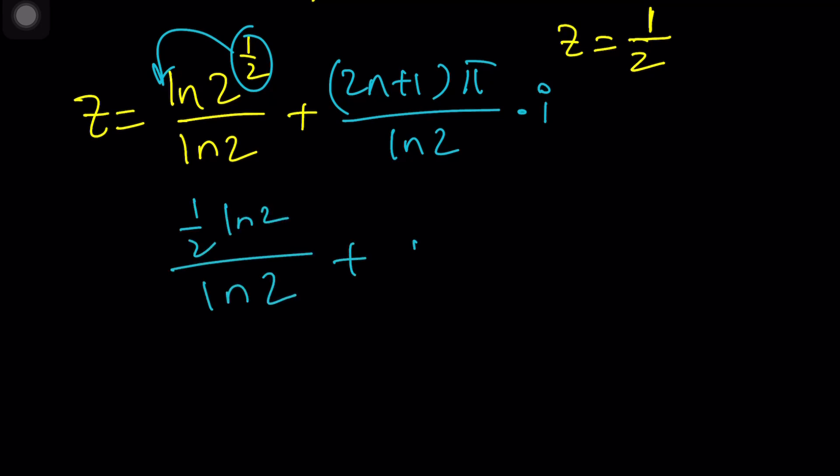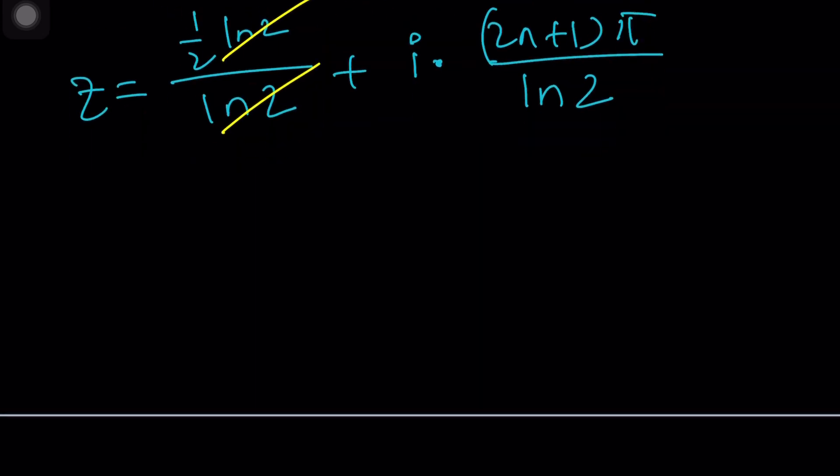The ln 2 can be cancelled out. And now I can write my z as 1 half plus i times 2n plus 1 pi divided by ln 2.